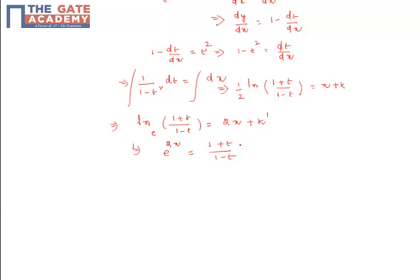We take all these constants and consider it as k1, whatever constant. So e power 2x into 1 minus t is equal to some constant k1 into 1 plus t.